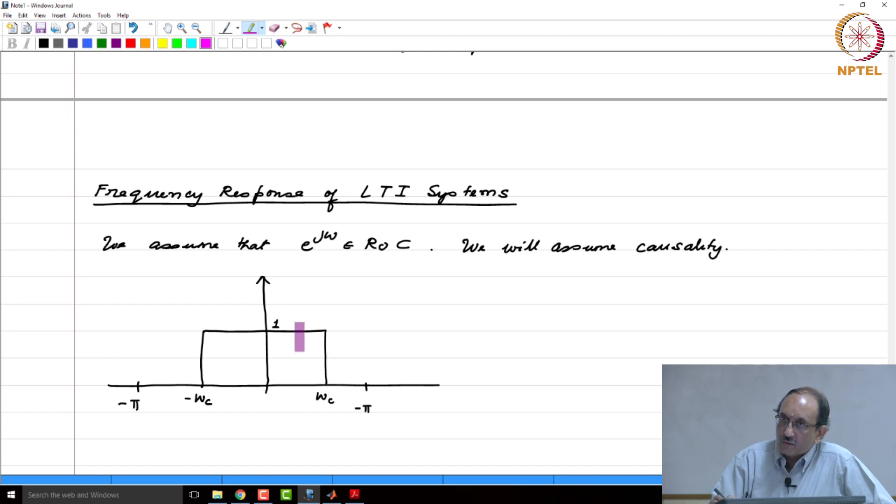And for ideal filters, the transition from pass band to stop band happens abruptly. Similarly, this is the ideal low pass filter's frequency response. And similarly, you can have pictures of low pass, band pass and band stop.